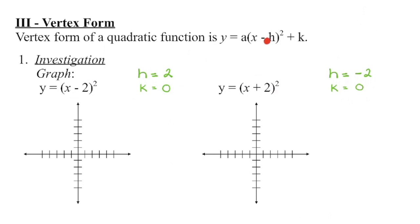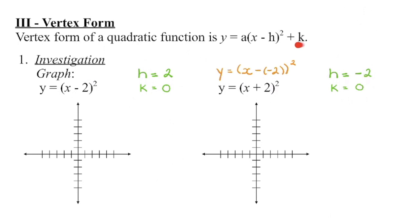Now for this second one, remember the original form is x minus h. Another way to think about it: minus and negative, when you multiply those signs together they become a positive. So this h value is actually a negative 2 — it's always the opposite sign of what you think it will be in the bracket. So a positive 2 in the bracket gives h = 2, but a plus sign means h is negative 2. And again, k is 0 since we don't write plus 0.